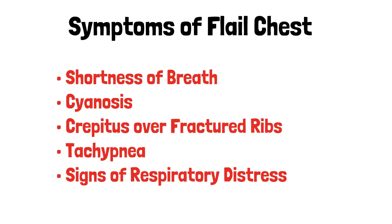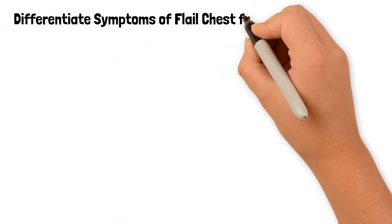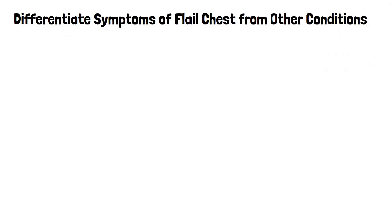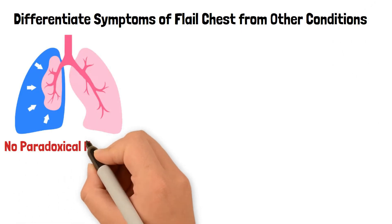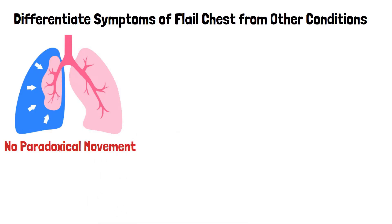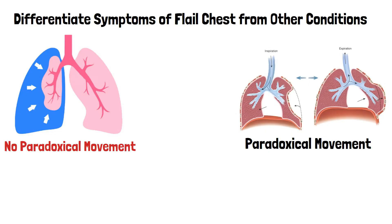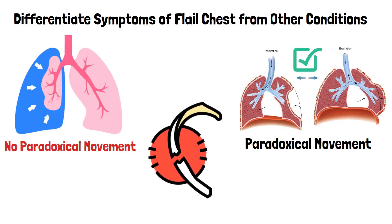To differentiate flail chest from other conditions, remember that a pneumothorax may also cause respiratory distress but does not have paradoxical movement. This is why paradoxical motion is a key symptom that helps us identify a flail segment. This is important because somebody could have rib fractures without a flail segment being present. They would have pain in their ribs but would not have paradoxical motion.